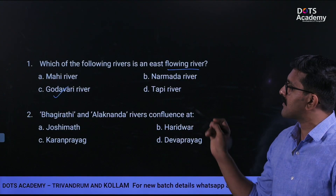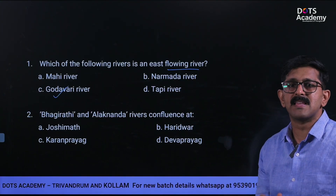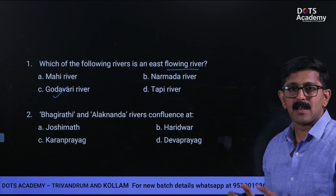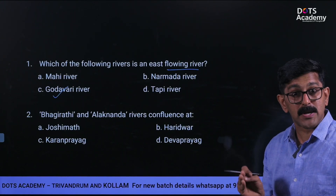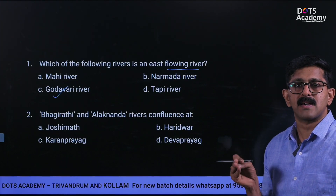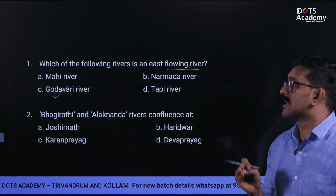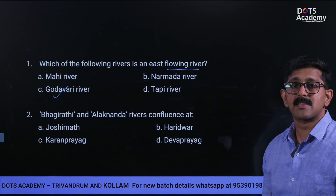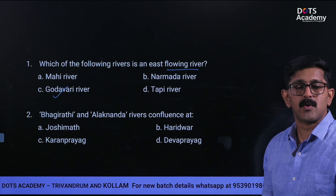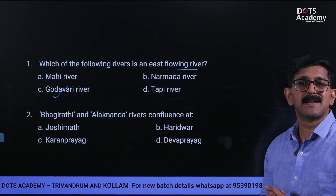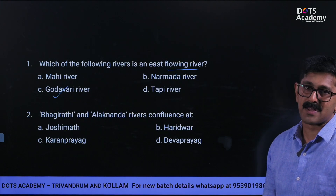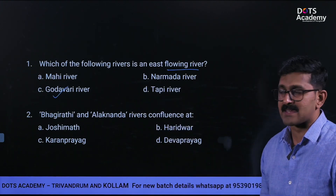Mahi river, Narmada river, and Tapti river all flow into the Arabian Sea. Narmada river is the longest and largest west-flowing river of Peninsular India. The second largest and longest west-flowing river of South India is the Tapti river. Godavari river is the longest and largest river of Peninsular India. Mahi river crosses the Tropic of Cancer. Option C is the correct answer.